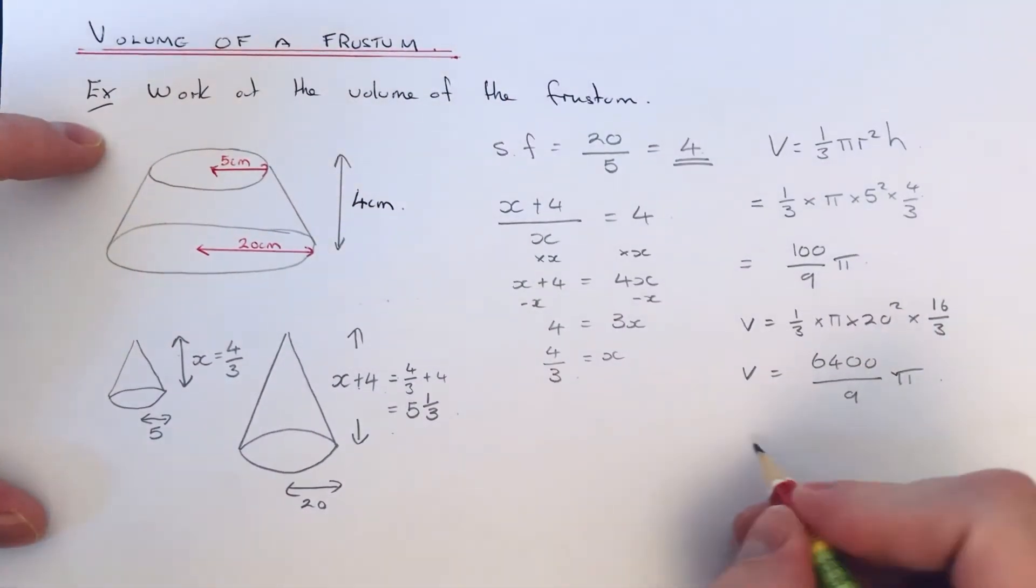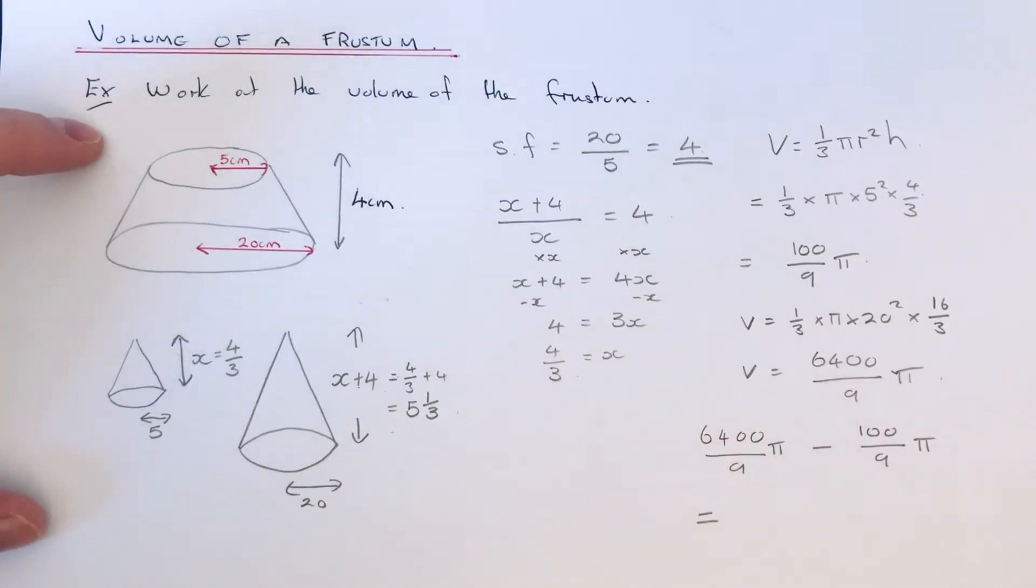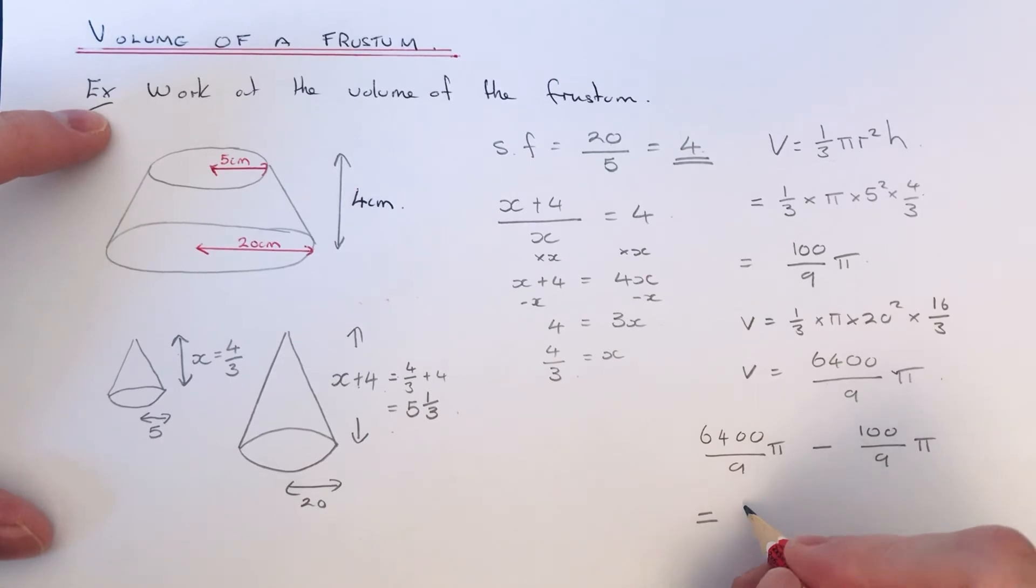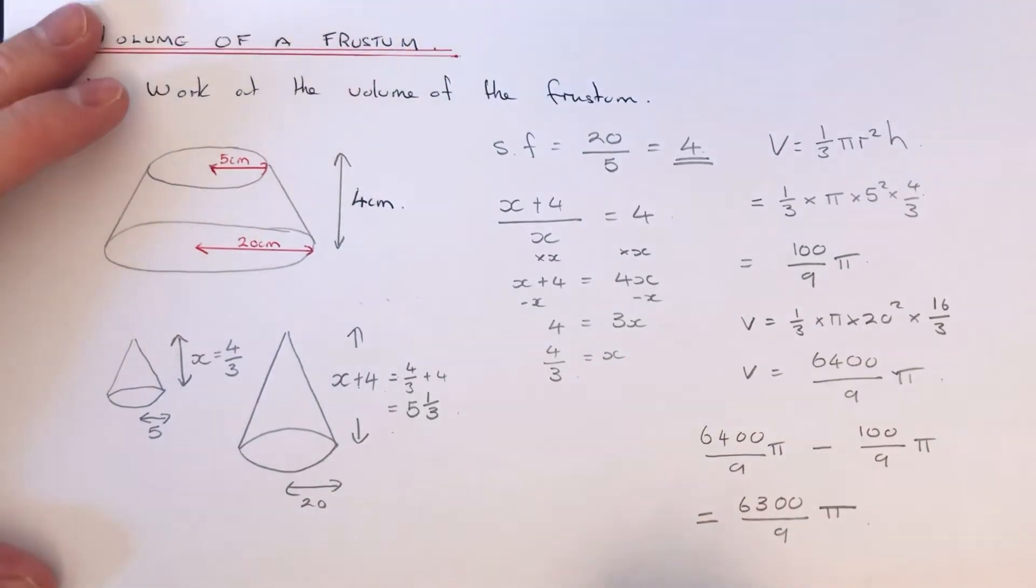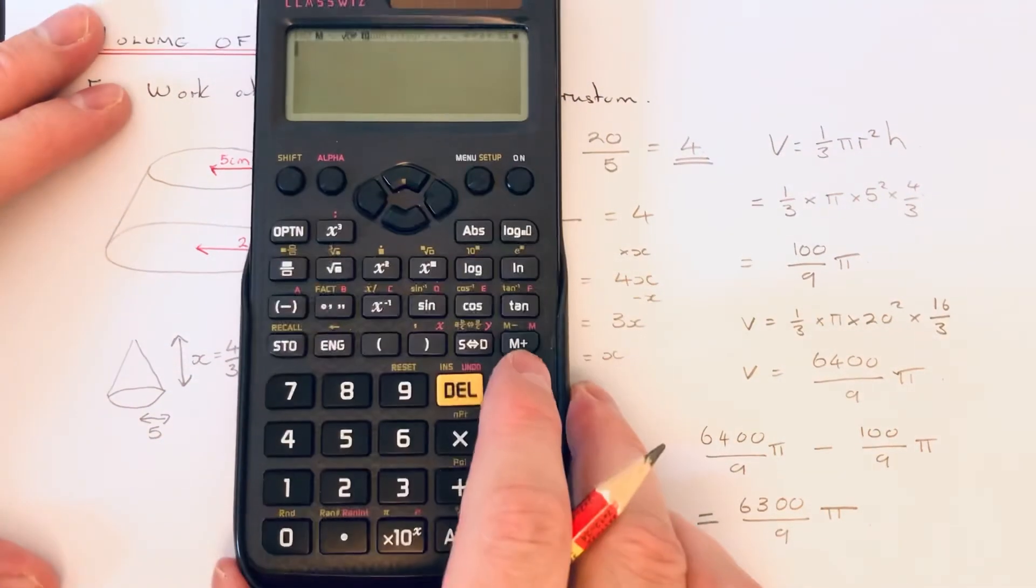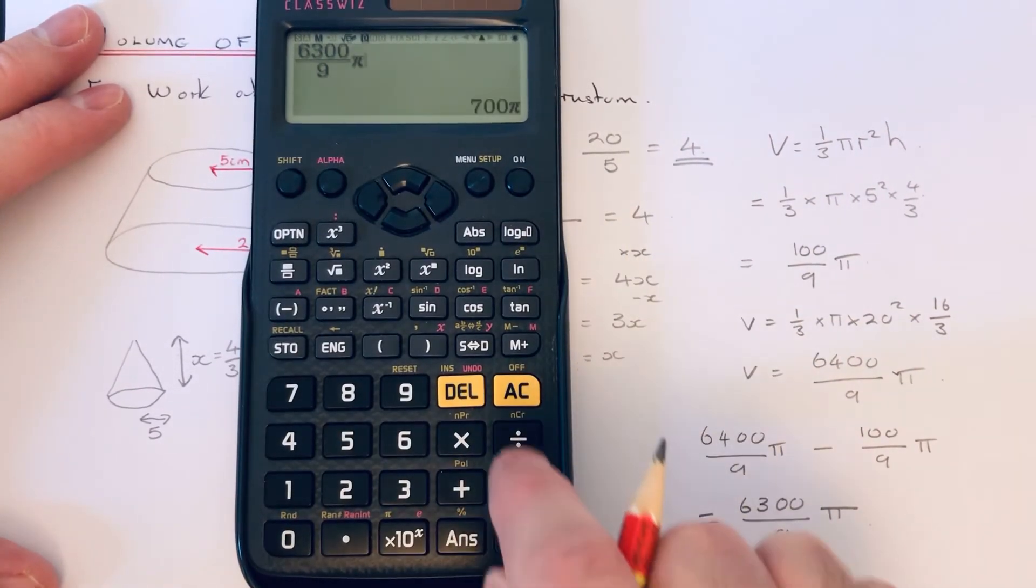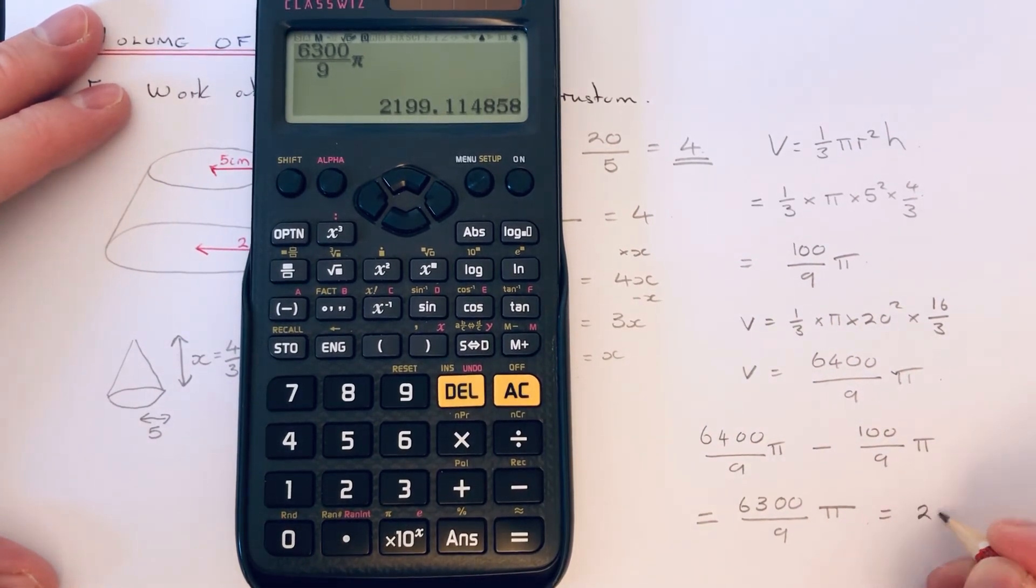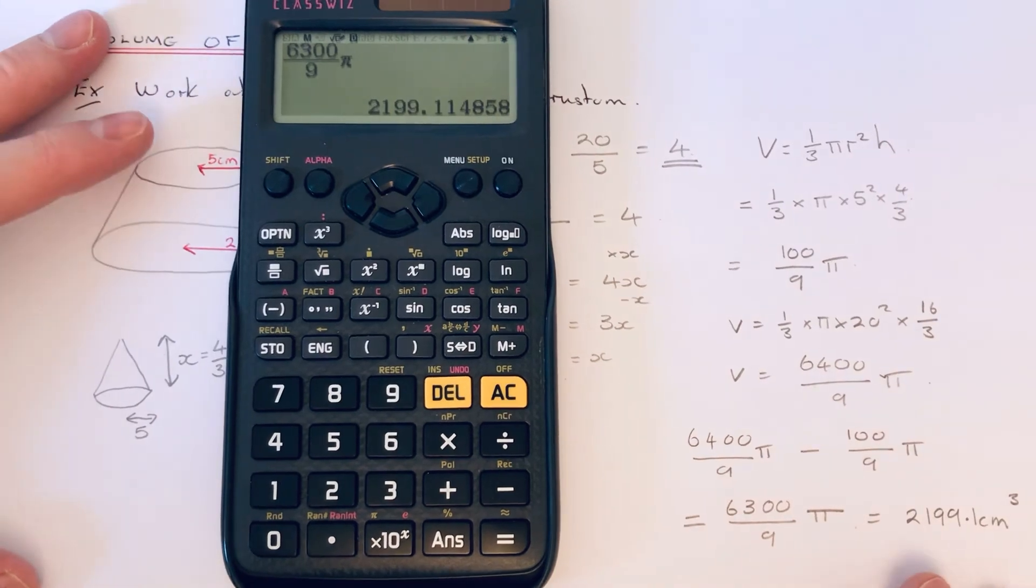So it'll be 6400 over 9 pi minus 100 over 9 pi. We could just take 100 off the 6400, so that's 6300 over 9 pi. If you want it as a decimal, just type that in on your calculator. So it's 2199.1 centimeter cubed. So I hope you liked this video.